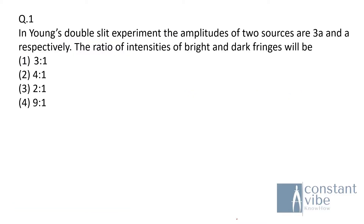In the first question: in Young's double slit experiment, the amplitudes of two sources are 3A and A respectively. The ratio of intensities of bright and dark fringes will be — here are the options.